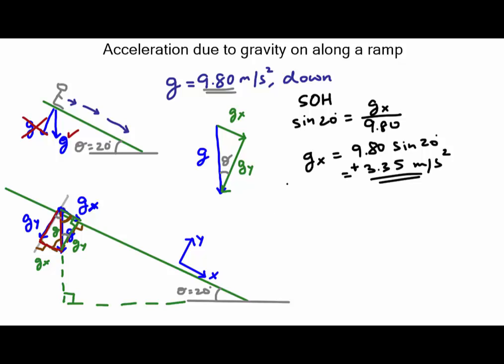And then for gy it's the adjacent to the angle theta. I need adjacent, I know hypotenuse, the function I need is cosine. So cosine of 20 degrees equals gy divided by 9.80. And when you simplify and solve for gy you will get 9.21 meters per second squared. And looking at our picture over here gy points down into the ramp, positive y-axis points up away from the ramp, so this is a negative value.